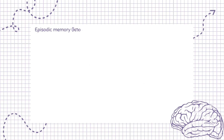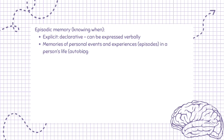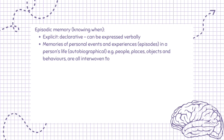Episodic memory — knowing when. Explicit, declarative, can be expressed verbally. Memories of personal events and experiences, episodes, in a person's life — autobiographical. For example, people, places, objects, and behaviors are all interwoven to produce a single memory.